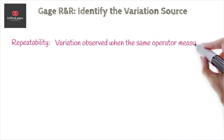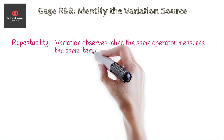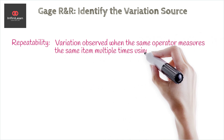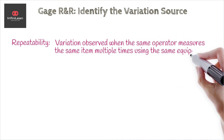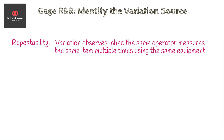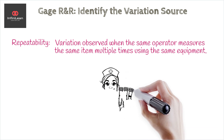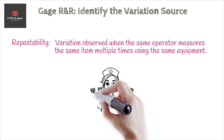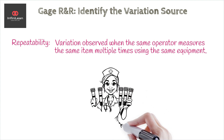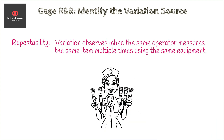Repeatability refers to the variation observed when the same operator measures the same item multiple times using the same equipment. If there are discrepancies in these measurements, it indicates issues with repeatability.